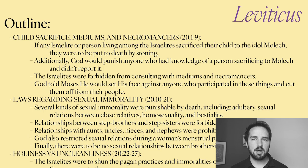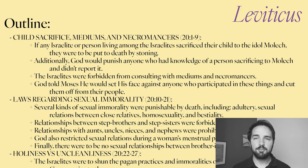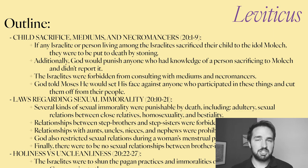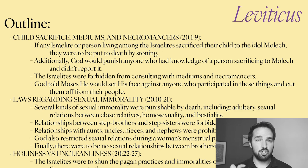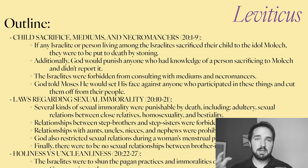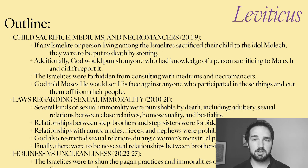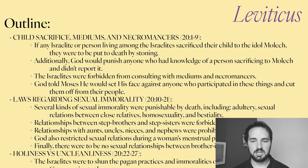This chapter has 27 verses, and a lot of things discussed have already appeared in previous chapters. Our first section, verses 1 through 9, covers child sacrifice, mediums, and necromancers. If any Israelite or person living among the Israelites was found sacrificing their child to Molech, that person was to be killed by stoning. Additionally, God was going to punish anyone who had knowledge of someone sacrificing to Molech and didn't report it. If a family member was doing it, you were required to report them, and they would receive the death penalty. The Hebrews were also forbidden from consulting mediums and necromancers. God told Moses he would set his face against anyone who participated in these things, and that they would be cut off from their people.